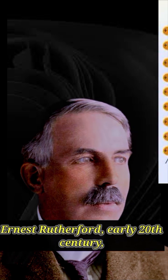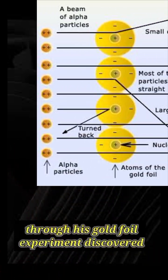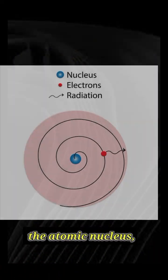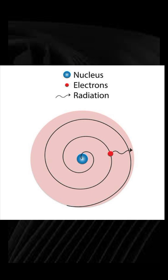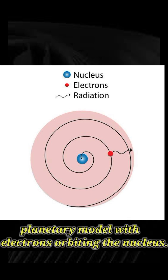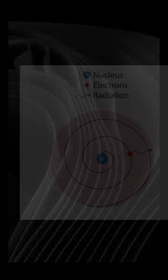Ernest Rutherford, early 20th century, through his gold foil experiment, discovered the atomic nucleus — a dense, positive core — and proposed the planetary model with electrons orbiting the nucleus.